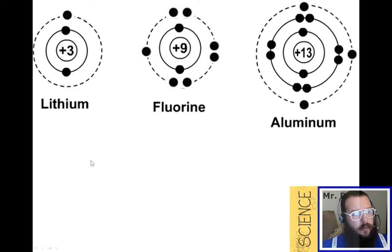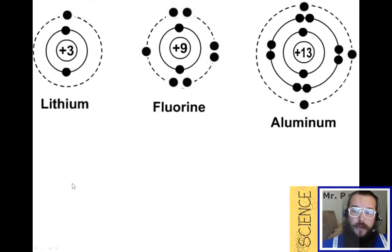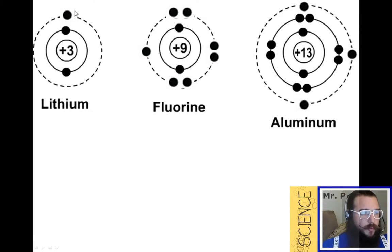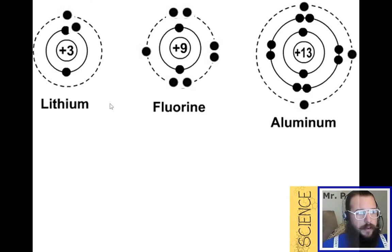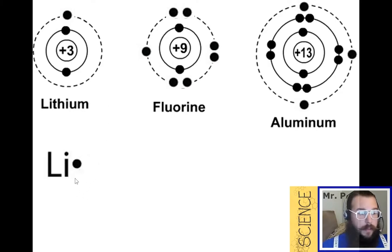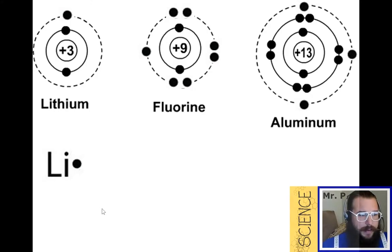So if we're going to take our Bohr models and use them to make some Lewis dot diagrams, it's actually super easy. All you have to do is look at the outermost electron shell — those valence electrons. For example, here's lithium, my favorite element. We just take that outermost electron, we slap the atomic symbol next to it, and boom, you're done. Lewis dot structure, electron dot diagram. It really is that easy.